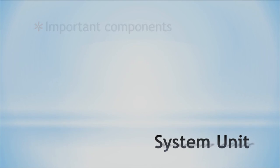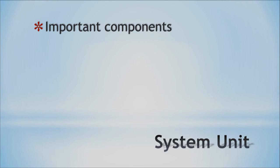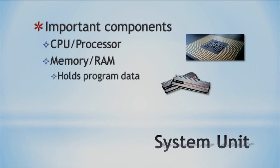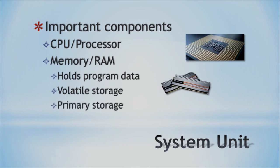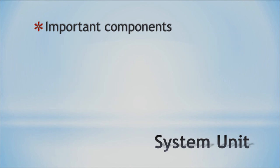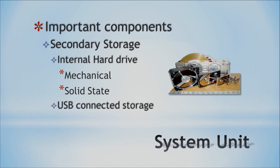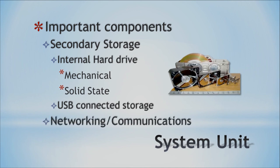The system unit contains all your important components: your video card, system memory, hard drive, and optical drives. Your system memory is very important — it holds your program data, is volatile storage, and is your primary storage. Volatile means once the system is turned off, it loses all memory. The system unit also contains secondary storage such as hard drives — both mechanical and solid-state drives, with solid-state becoming more prevalent. You also have USB-connected storage like thumb drives, and networking and communication components so you can connect to the internet, check email, and browse the web.